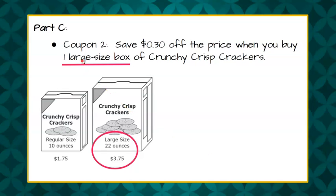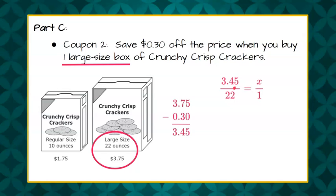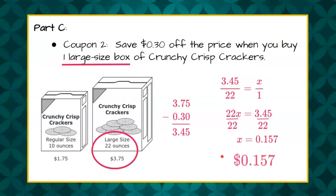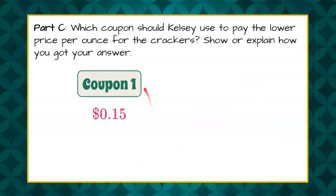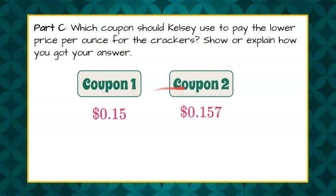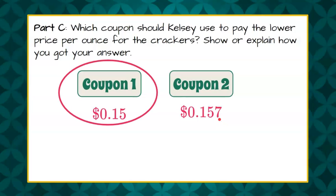Coupon two: we have one large-sized box and we're going to save 30 cents. So we take our $3.75, subtract our 30-cent coupon, and we pay $3.45 for 22 ounces. Cross product property: 22 times X is equal to $3.45. Divide each side by 22, and X is equal to 0.157. We leave it to the thousandth digit to compare. So coupon one is 15 cents per ounce, and coupon two is $0.157 per ounce. Coupon one is the best unit rate.